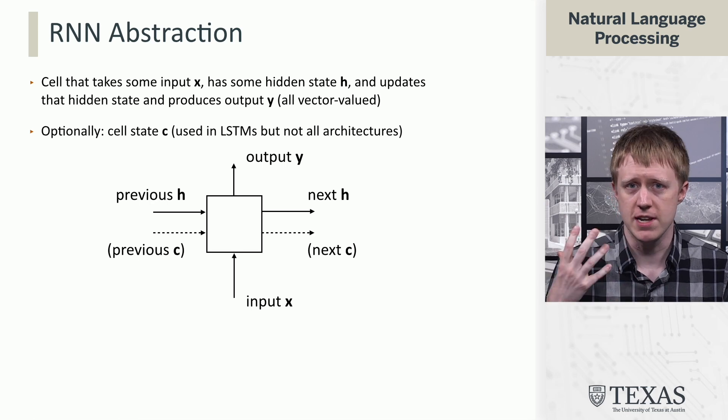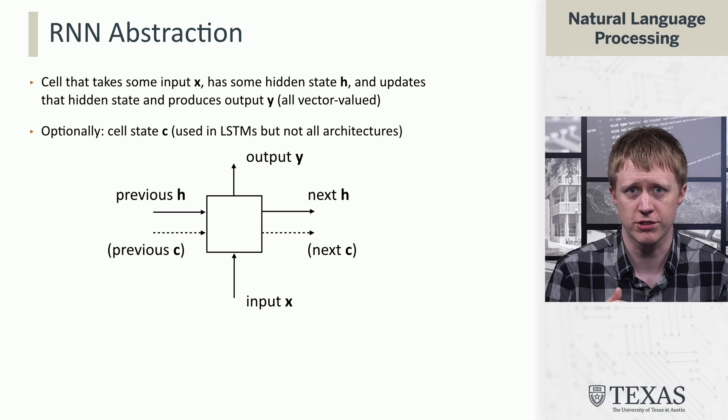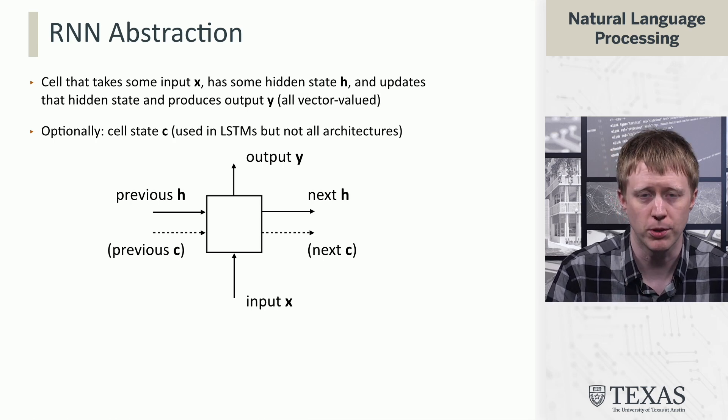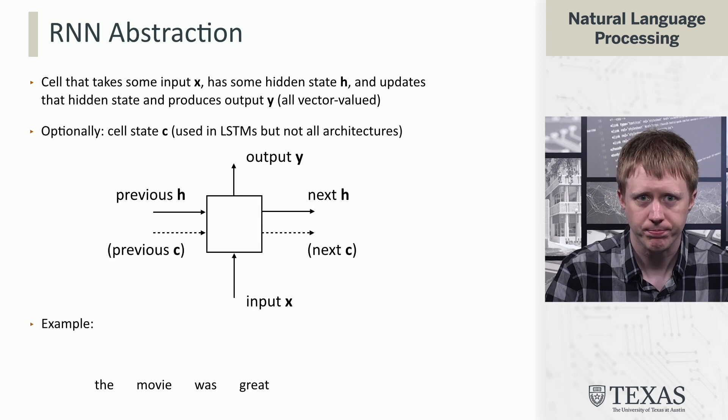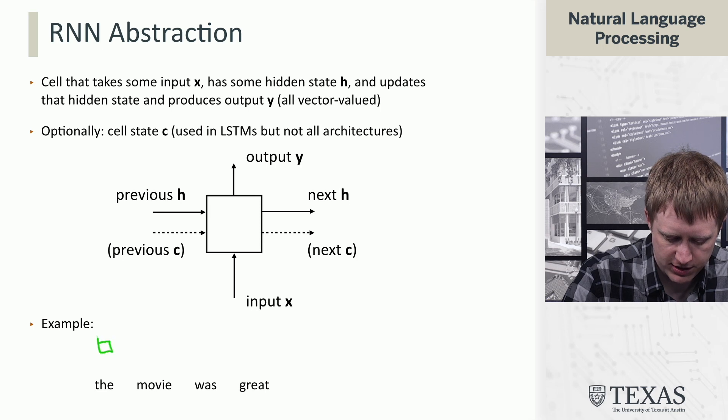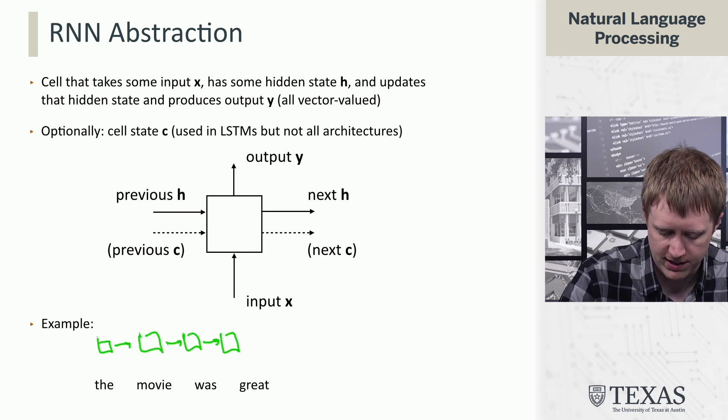Sometimes you'll also see other variables like c for cell state, which are used in architectures like the long short-term memory network. So I'm going to optionally put that here in the graph. What's the benefit of this? Well, we can instantiate this architecture over this sentence here.